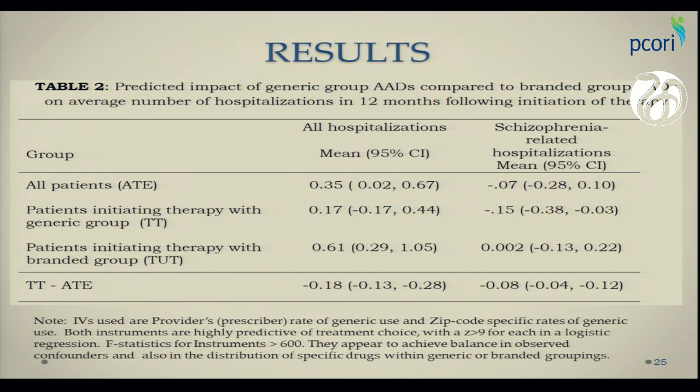When we estimated the average effect, and I'm looking at all hospitalization and schizophrenia-related hospitalization, the average effect was 0.35, was highly significant. And this is comparing a generic group of antipsychotic to a branded group of antipsychotic. But among people who initiate with generic group in practice, the average effect is not significant. And here there is benefits in terms of schizophrenia-related hospitalization. In fact, if people initiate in branded group and you force them to start on generic, you would increase their hospitalization, overall hospitalization, significantly.